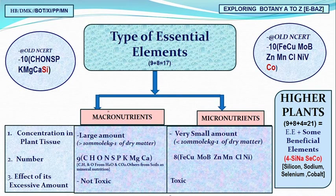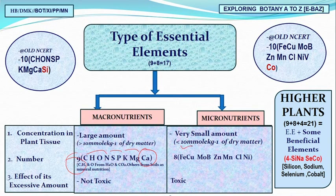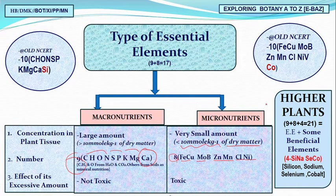We studied micronutrients, which are required in concentrations less than 10 millimoles per kg dry matter. The mnemonic for the eight micronutrients is: Fe, Cu, Mo, B, Zn, Mn, Cl, Ni. In higher plants like mango and banana, a total of 21 elements are found: nine macronutrients, eight micronutrients, and four beneficial elements.